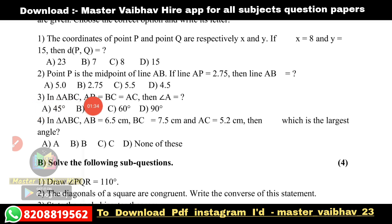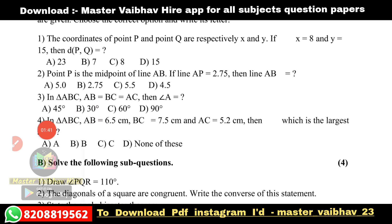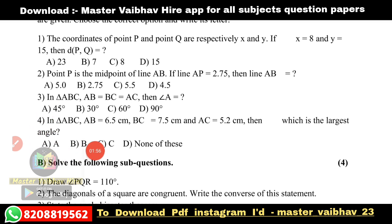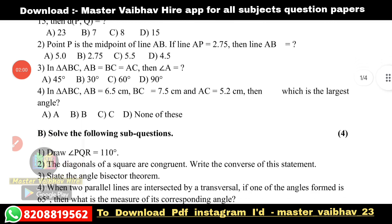If AB is equal to AC, then angle A is equal to what? Option A: 45 degrees, B: 30 degrees, C: 60 degrees, D: 90 degrees. Next, if AB is equal to 6.5 cm, BC is equal to 7.5 cm, and AC is equal to 5.2 cm, then which is the largest angle? Options: A, B, C, or D — none of these. Select the correct option.